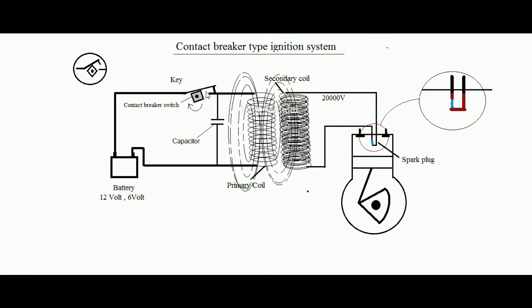Exactly on time, the contact breaker either closes or opens the circuit. Now, a capacitor can be employed in parallel to this primary coil. The benefit of this can be understood as follows — a capacitor, when connected to a DC source, starts accumulating electric charge.